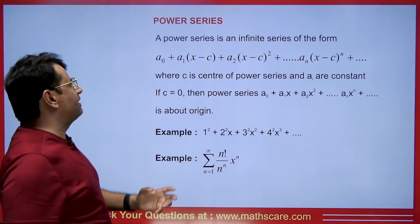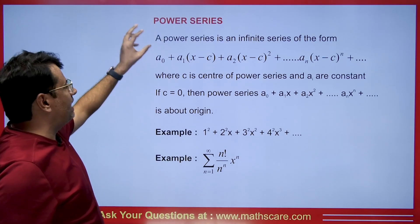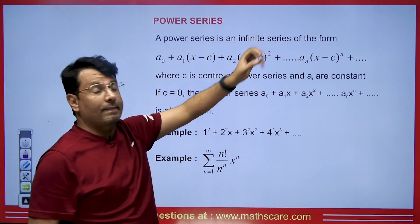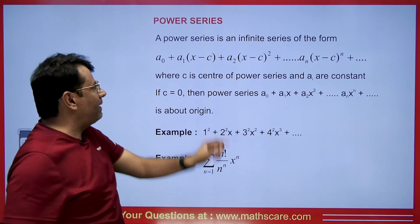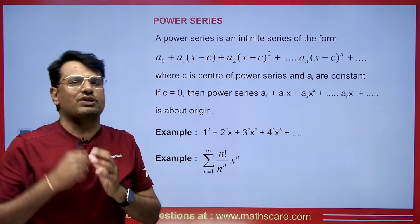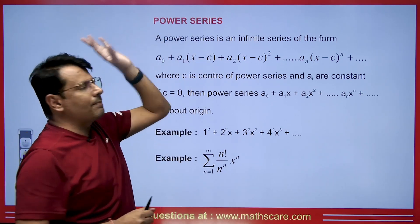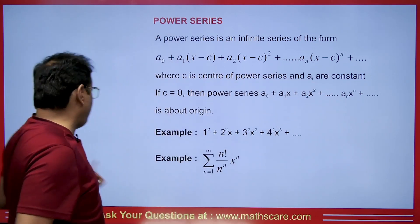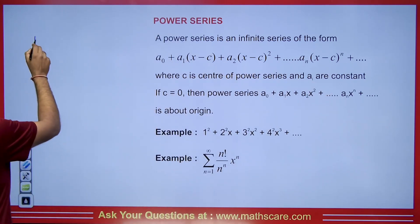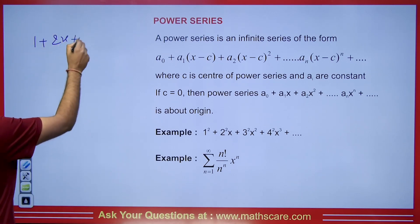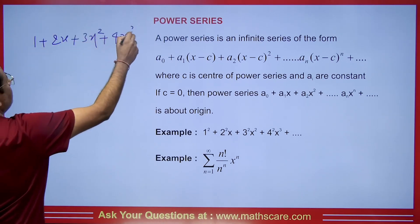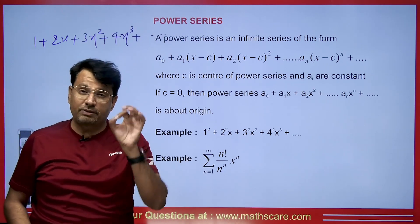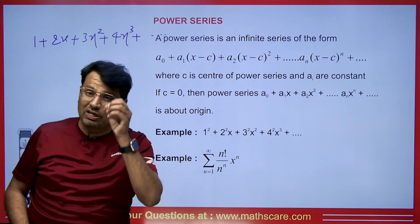If we talk about the power series, it goes: a₀ plus a₁(x − c) plus a₂(x − c)² and so on. We have this type of infinite power series, where c is the origin. Now, if c becomes 0, the power series simplifies. For example, 1 plus 2x plus 3x² plus 4x³ — in this kind of infinite series, the origin is 0.